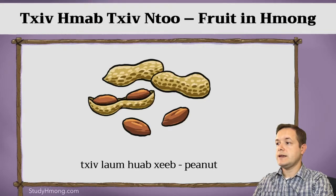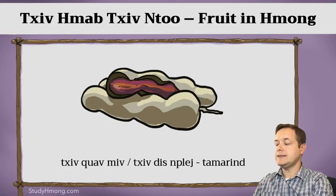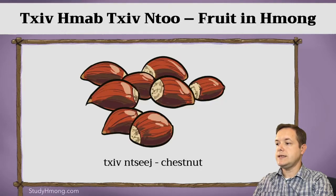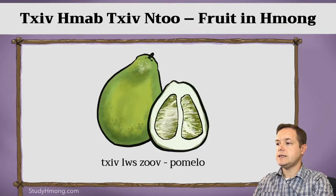That's a peanut. Again, peanut doesn't grow on a tree, but it's considered a fruit — it's an exception.